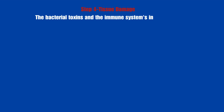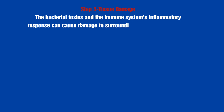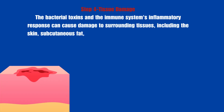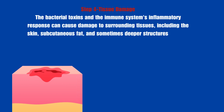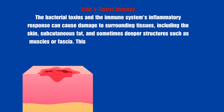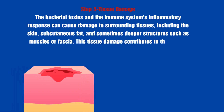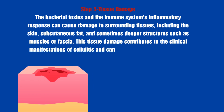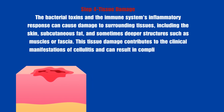Tissue damage: The bacterial toxins and the immune system's inflammatory response can cause damage to surrounding tissues, including the skin, subcutaneous fat, and sometimes deeper structures such as muscles or fascia. This tissue damage contributes to the clinical manifestations of cellulitis and can result in complications if left untreated.